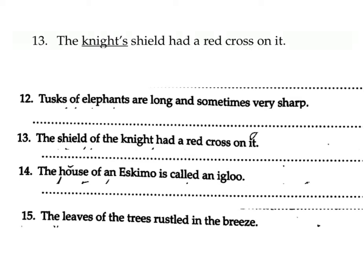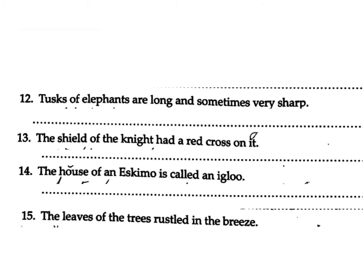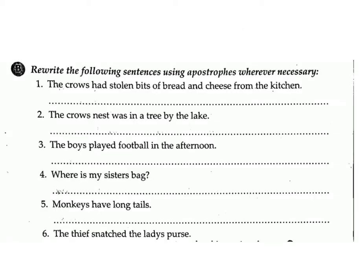13. 'The shield of the knight had a red cross on it.' Answer: 'The knight's shield had a red cross on it.' 14. 'The house of an Eskimo is called an igloo.' Answer: 'An Eskimo's house is called an igloo.' 15. 'The leaves of the trees rustled in the breeze.' Answer: No change.